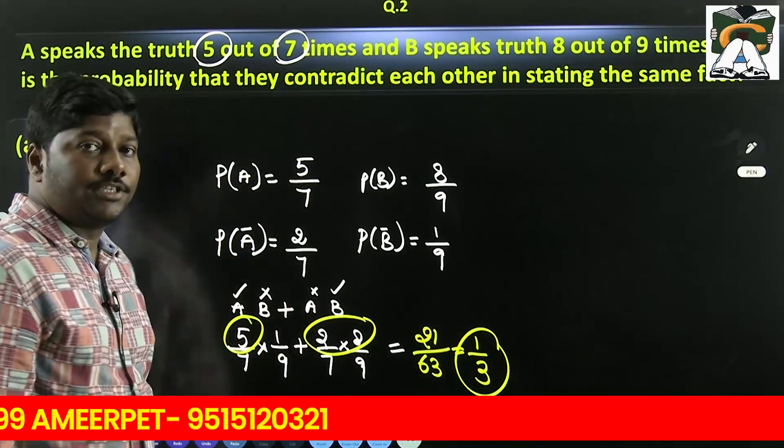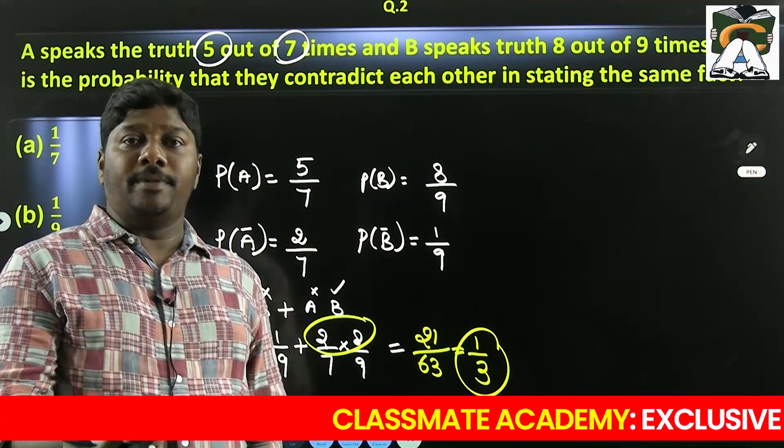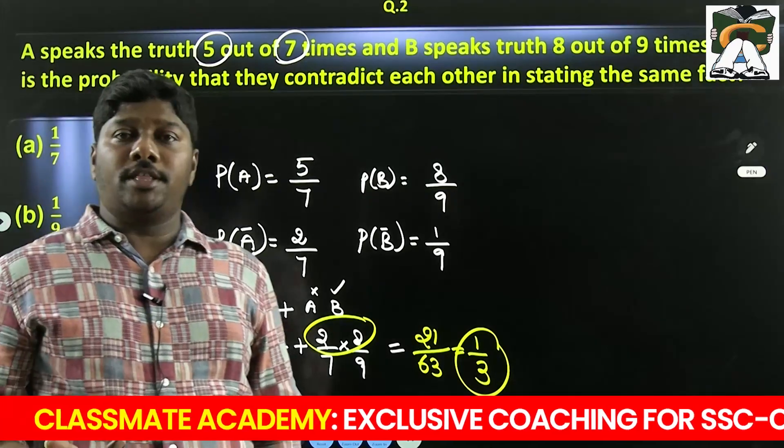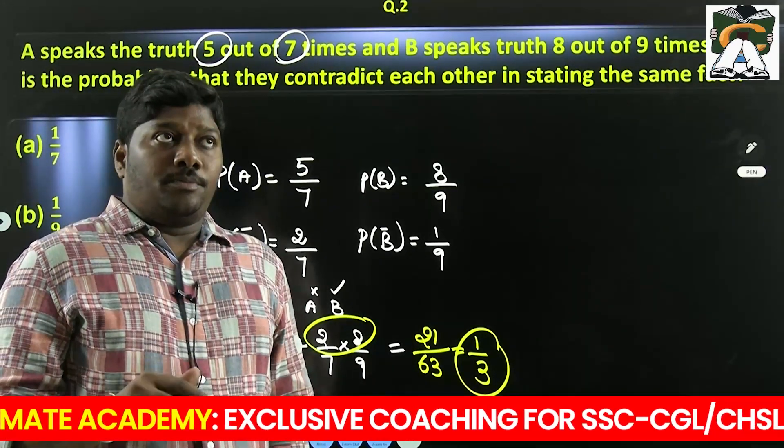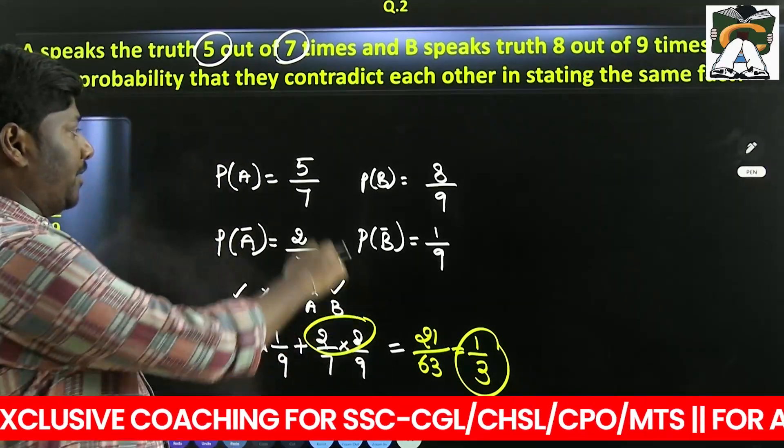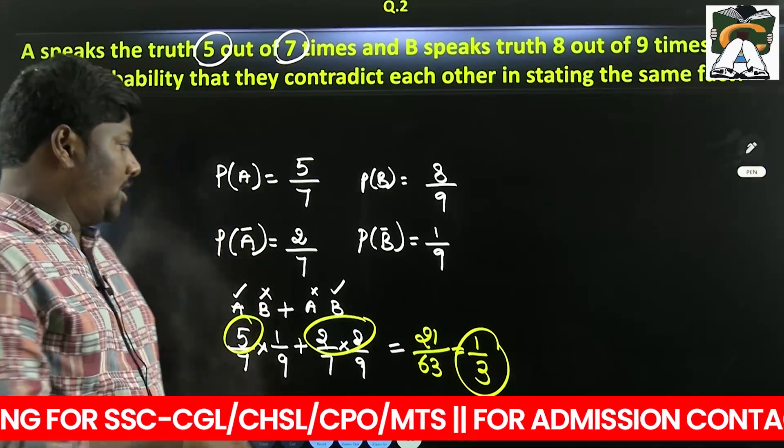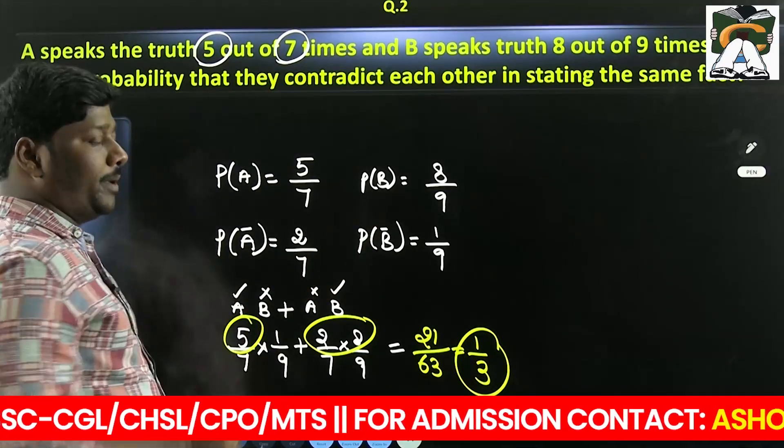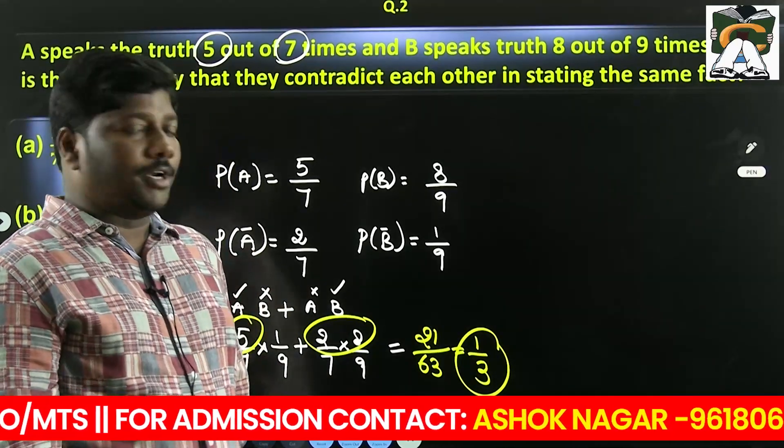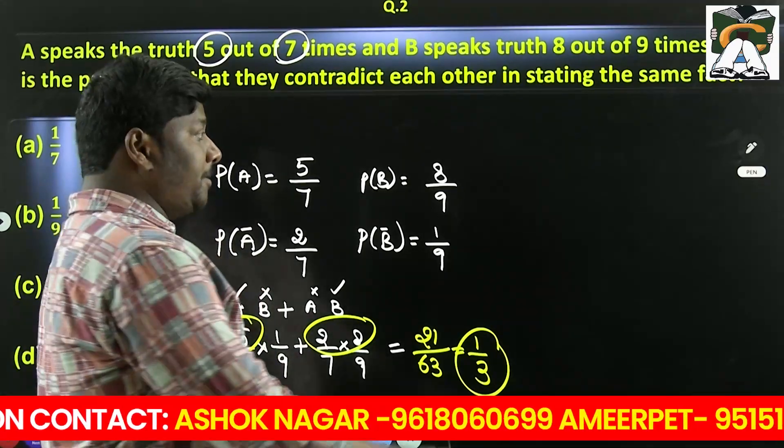So they contradict each other means if A speaks the truth, B should not speak the truth. While B is speaking the truth, A should not speak the truth. For example, both of them speak the truth: simple 5 by 7 into 8 by 9. Both of them are not speaking the truth: 2 by 7 into 1 by 9. At least one of them speak the truth. This question is very important.